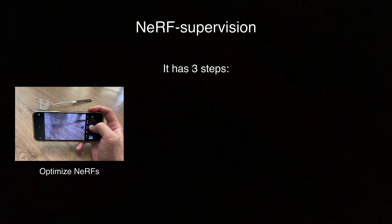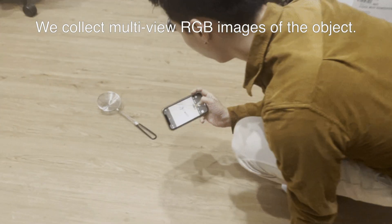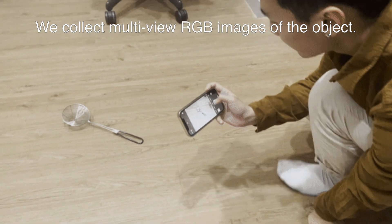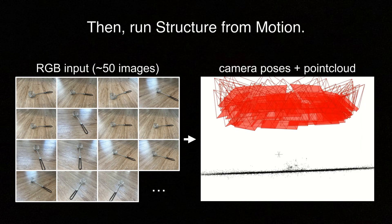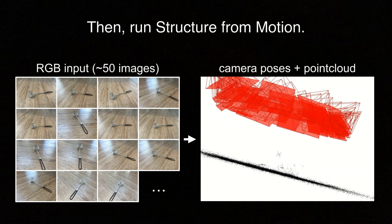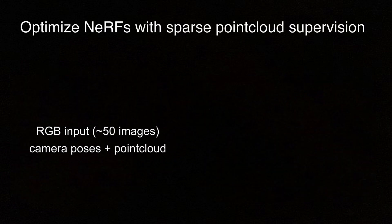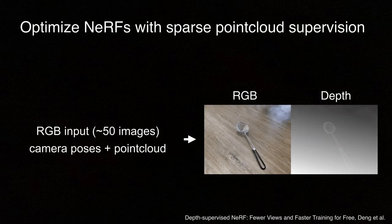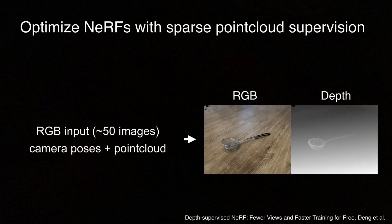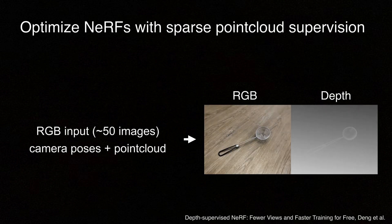NeRF Supervision consists of three steps. First, we need to create a NeRF of the object that we're interested in. We start by collecting multi-view RGB images of the object, then apply structure from motion to recover the camera poses and the sparse point cloud of the scene. Although the original NeRF formulation only requires posed RGB images as supervision, we found that incorporating supervision from the sparse point cloud mitigates the noise caused by moving shadows during the image capturing process.